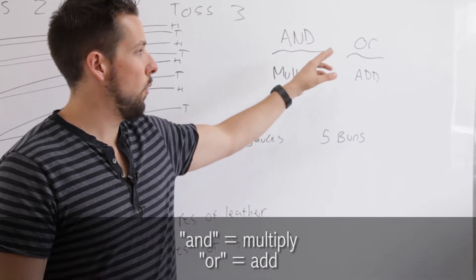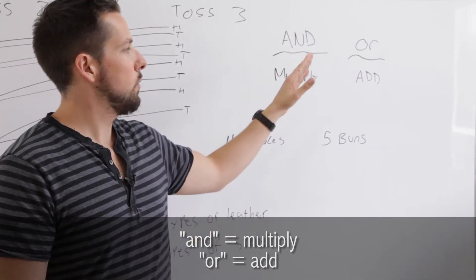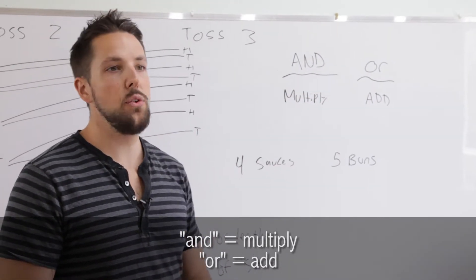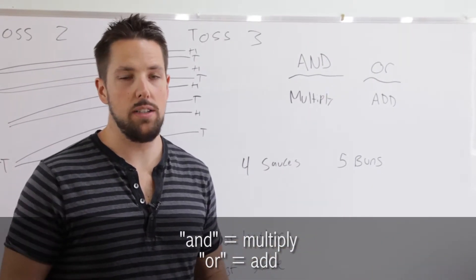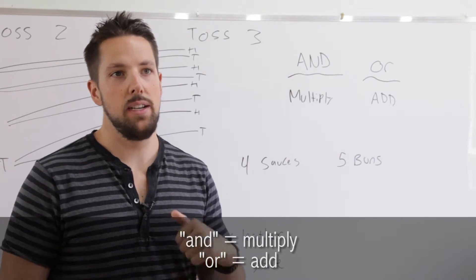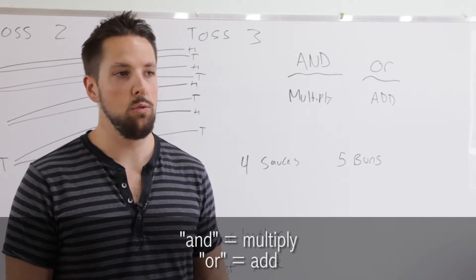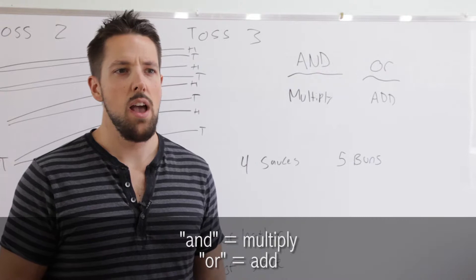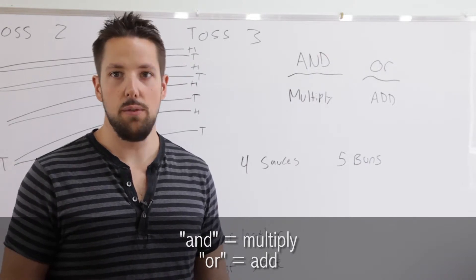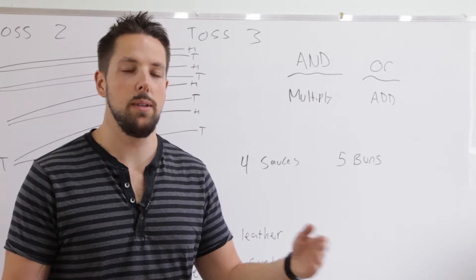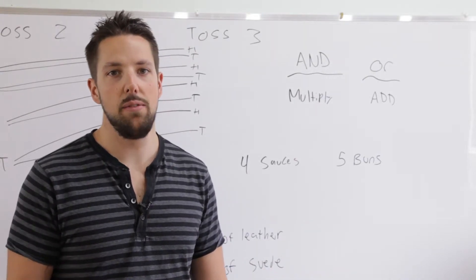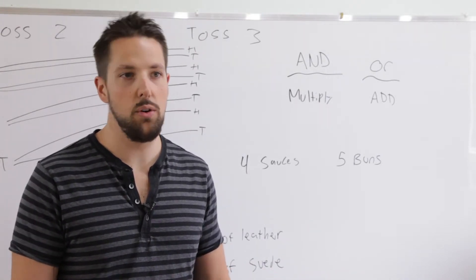Now we also have the or rule. So or when you see it means add. So if you have the choices between a certain number of options or a certain number of other options, you add them up. So if you could flip a coin or roll a dice, how many options do you have? You have two for the coin or six for the dice. So two plus six equals eight. You have eight total options when you're flipping a coin or rolling a die.